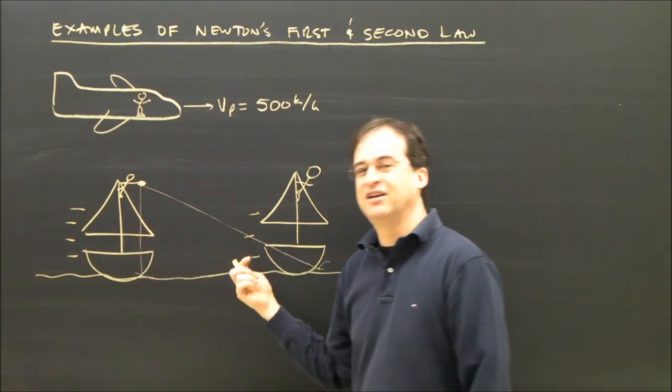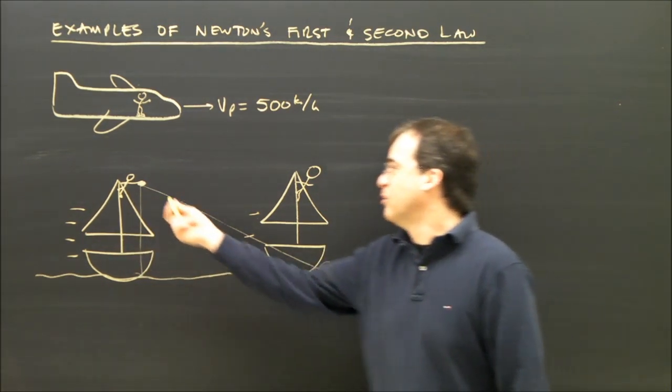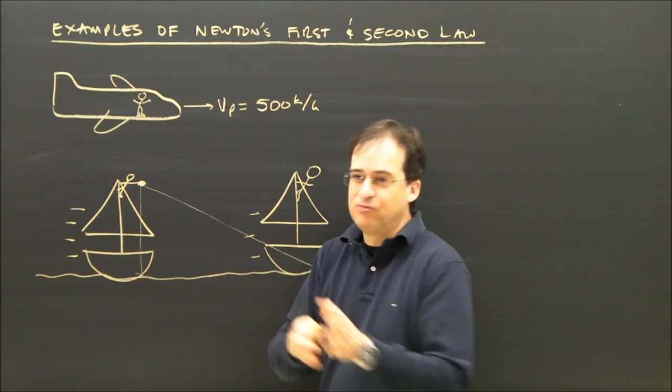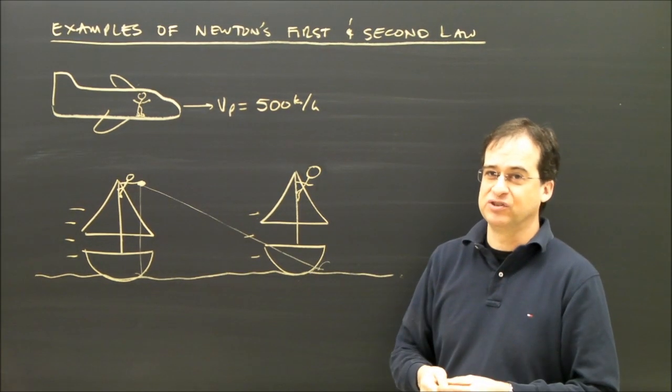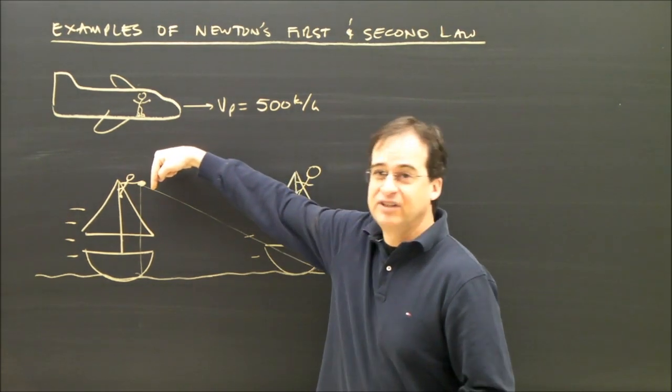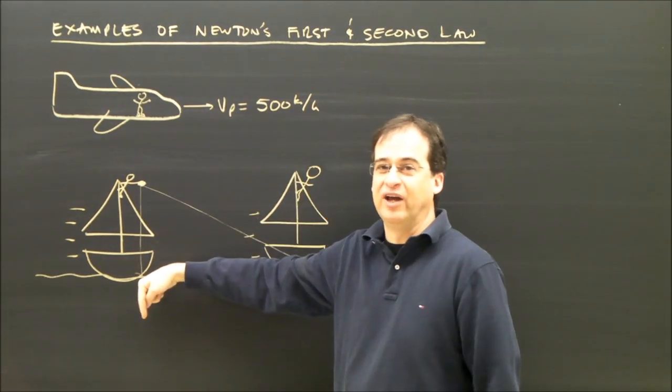Well, the boat's moving at 10 kilometers per hour to the right. The marble is moving at 10 kilometers per hour to the right. Objects that have no forces on them, or no unbalanced forces, will continue doing what they're doing. Yes, there is gravity. Gravity's unbalanced, and it's going to cause it to fall down.